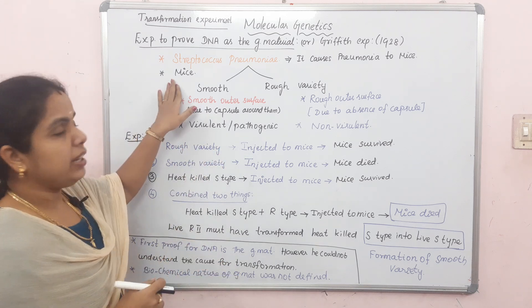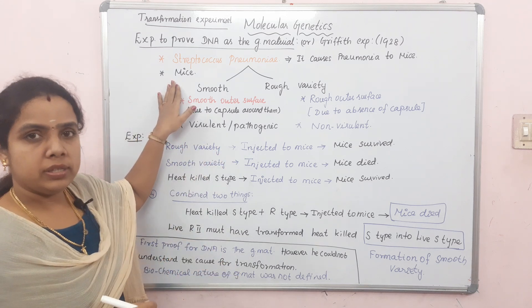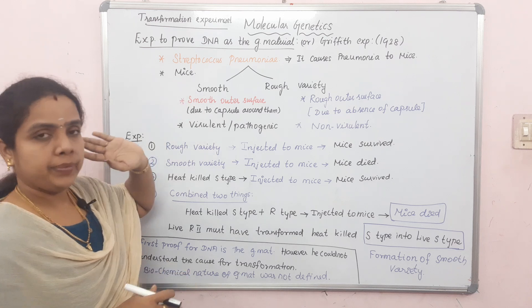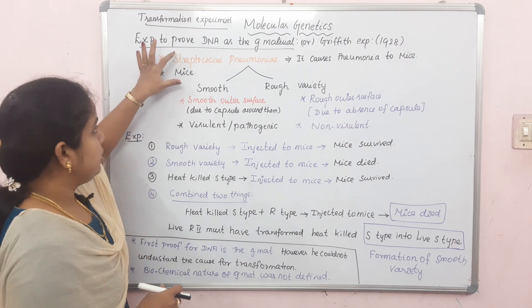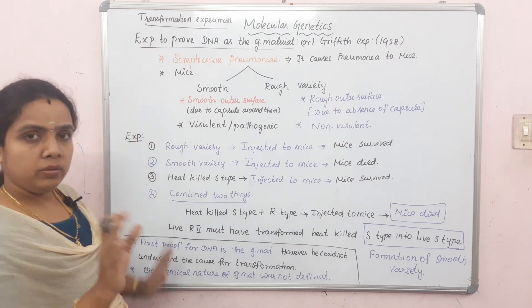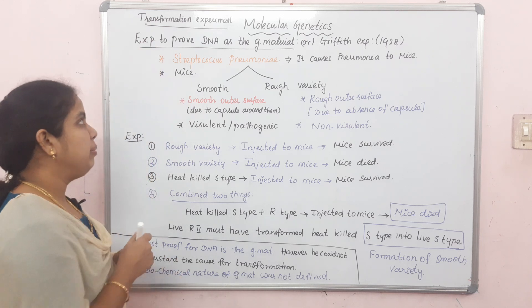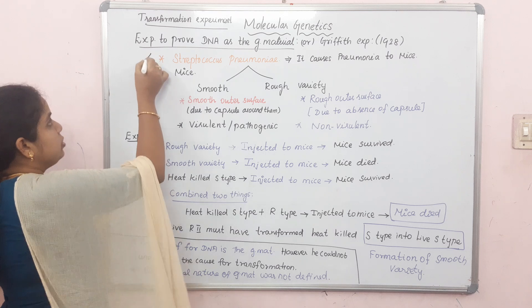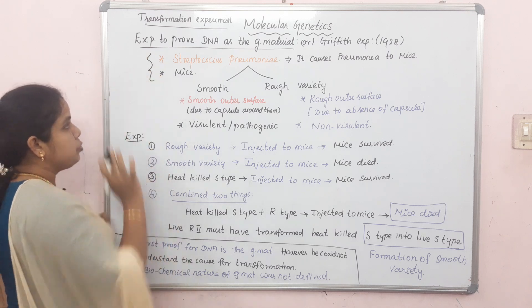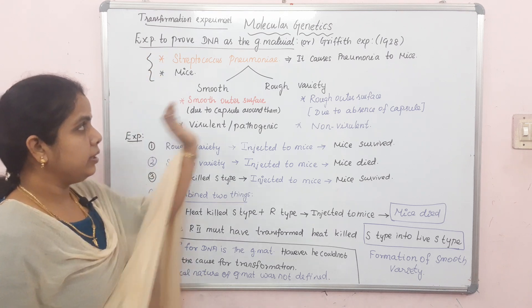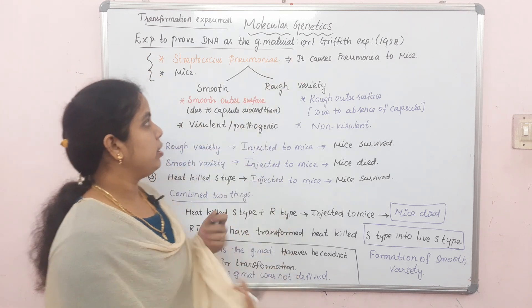The second organism used is mice. So Griffith used these two organisms: Streptococcus pneumoniae and mice.